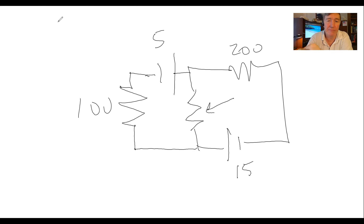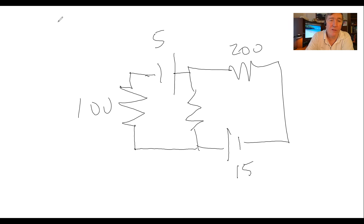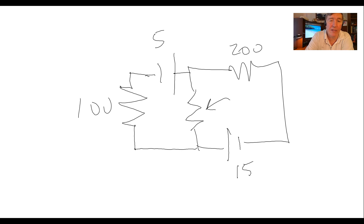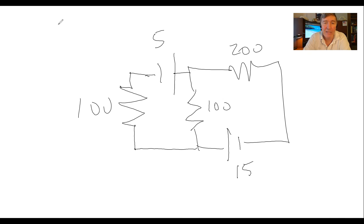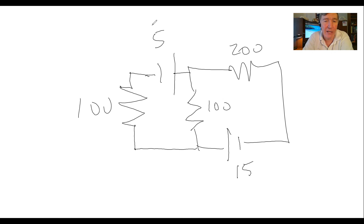I want to add another resistor in the middle here. Owen, give me a number for how many ohms — 100 ohms. So our circuit now has a 15V battery, a 5V battery, a 200-ohm resistor, a 100-ohm resistor on the left, and a 100-ohm resistor in the middle. We want to know how much current flows through each resistor.